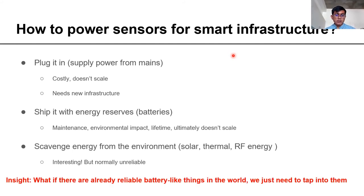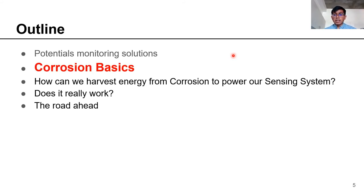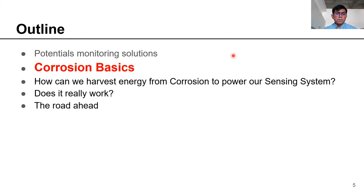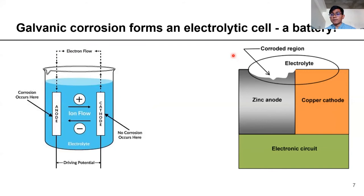Taking inspiration from energy scavenging, we explore whether there are existing reliable battery-like sources in the world we can tap into to power our sensors. It turns out our problem could be our solution. Corrosion is the degradation of refined metals. One of the most common types is galvanic corrosion, which occurs when two dissimilar metals come in contact through a conducting medium or electrolyte. Coincidentally, this is also the definition of battery operation — so whenever galvanic corrosion occurs, a tiny battery is being set up locally, providing driving potential and current available to us.